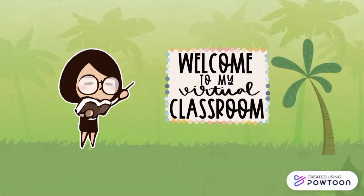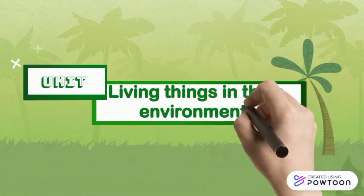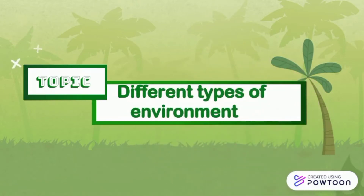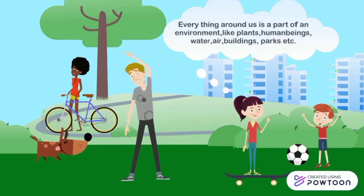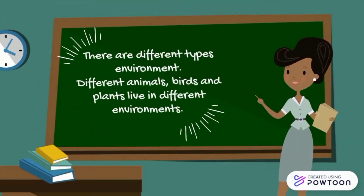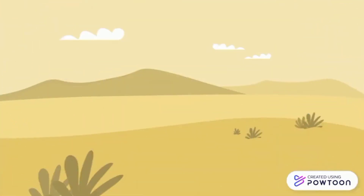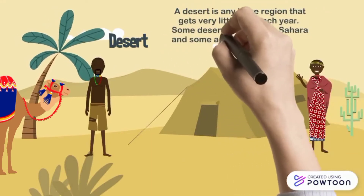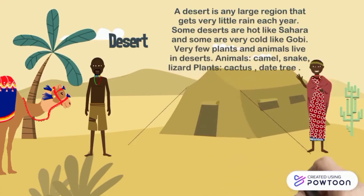Hi. A desert is any large region that gets very little rain each year. Some deserts are hot, like the Sahara, and some are very cold, like the Gobi. Very few plants and animals live in deserts. Animals: camel, snake, and lizard. Plants: cactus, date tree.